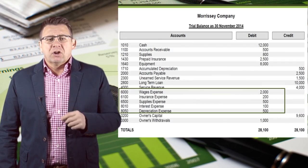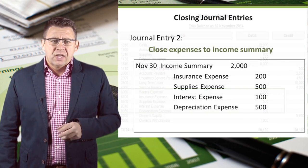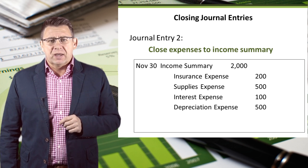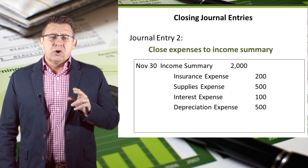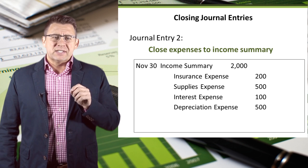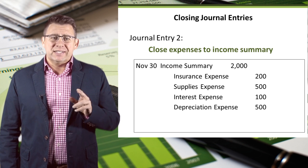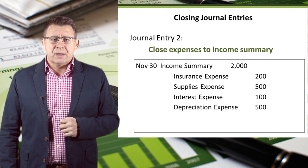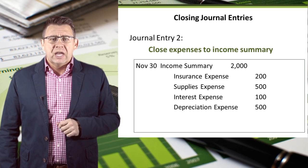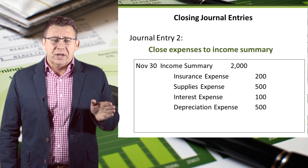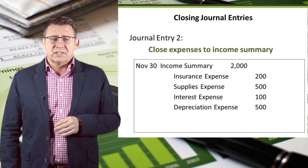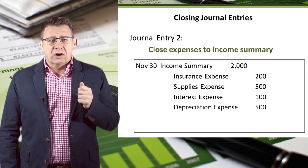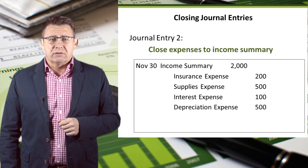Next, we will close our expense accounts. The second journal entry is to close expenses to income summary. We record our expenses separately in the journal entry because each account needs to be zeroed out, as you can see in the example. Income summary will then be debited for the total of the expenses. After posting this journal entry, our expenses will all be zeroed out.